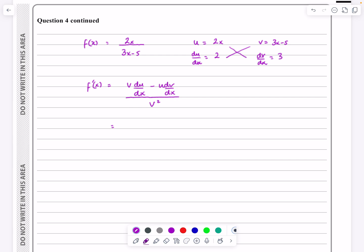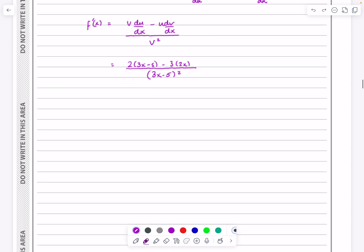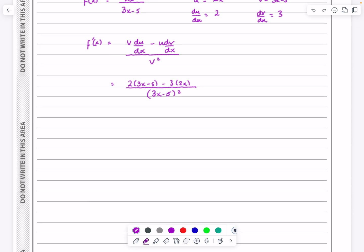Then v du is those two. u dv is those two when I'm multiplying. So I'm going to get 2 lots of 3x minus 5 minus 3 lots of 2x all divided by v squared. So all divided by 3x minus 5 squared. Just be careful about that minus when we're doing it then. So I'm going to get 6x minus 10 minus the 6x all over 3x minus 5 squared.